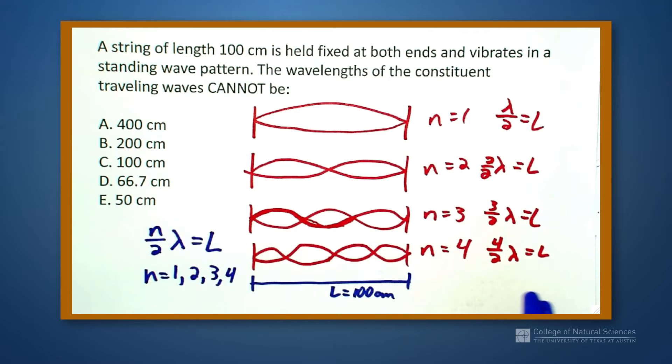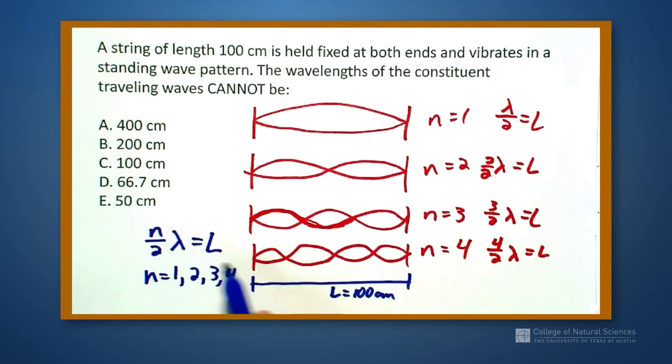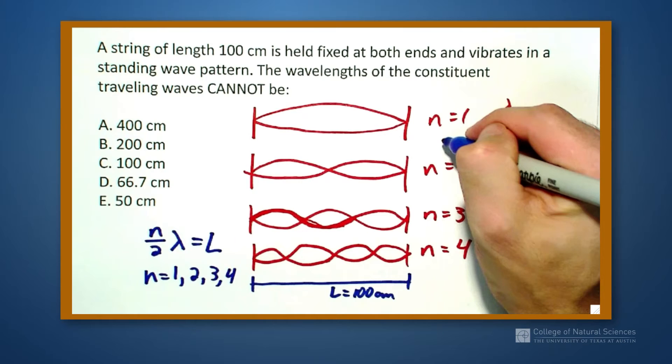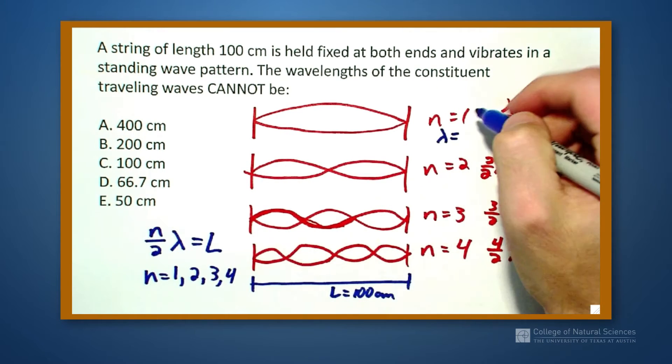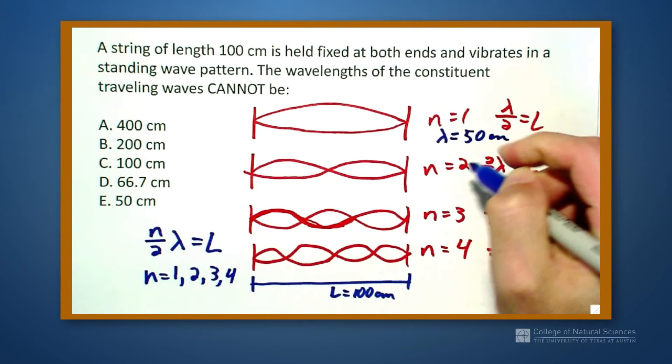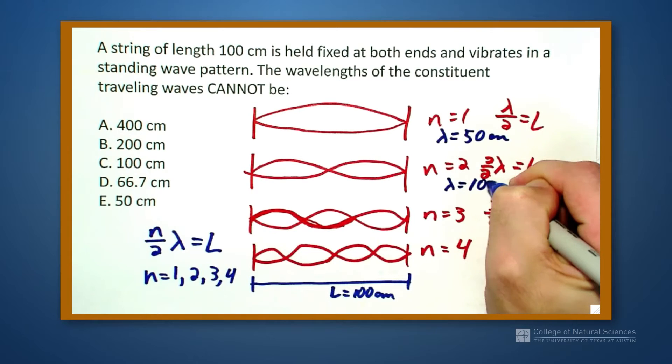So that means that my values for each of these, the wavelengths that I get in the first one, lambda is going to be 50 centimeters. The next one is going to be 100 centimeters.